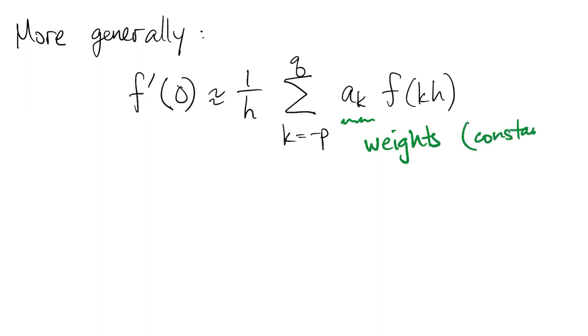In general, we could use the same process to estimate f prime at zero, using a linear combination of values of f at equally spaced nodes around zero. The a_k are called the weights of the formula, and they're constant. They're the same for every f that comes along.